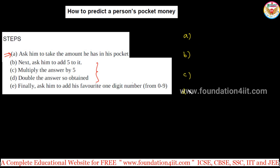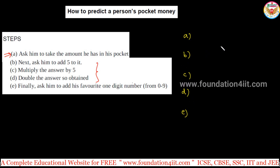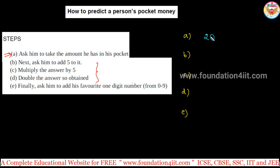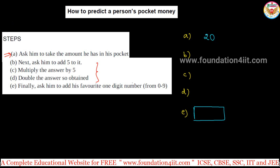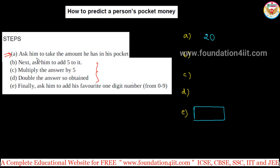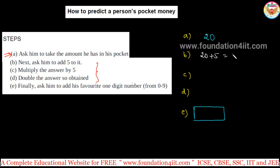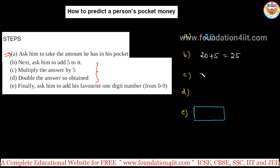Let's take an example. Say the amount in his pocket is 20 rupees — he will not tell this number. Only the final answer will be revealed to us, and from that final answer we can say the original amount. So according to the steps: step one, take the amount in the pocket — say 20. Step two, add 5 to it, so 20 plus 5 equals 25. Step three, multiply the answer by 5.